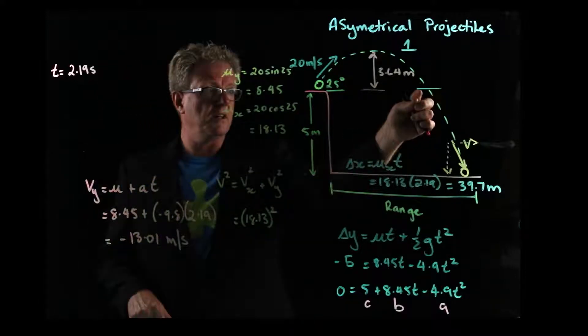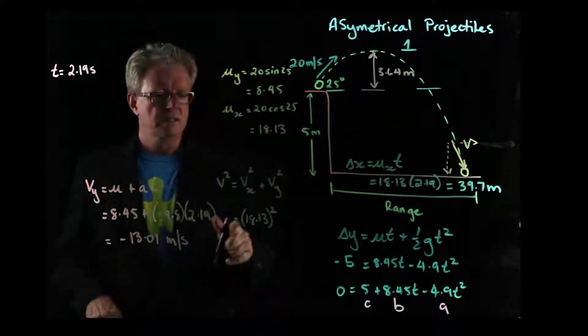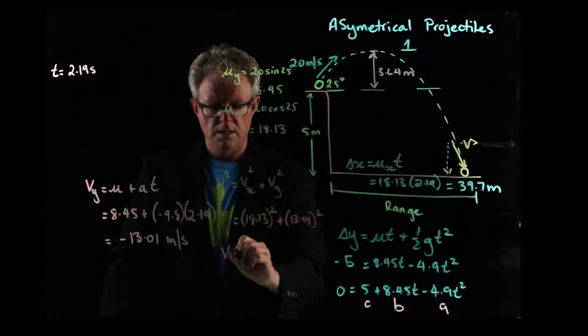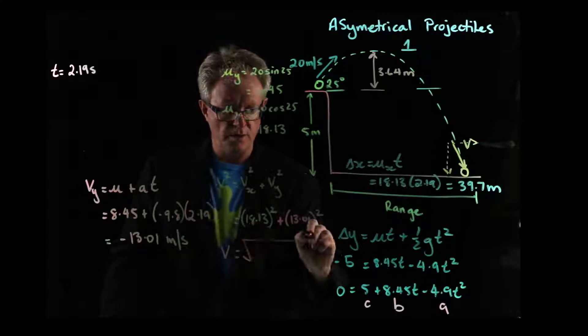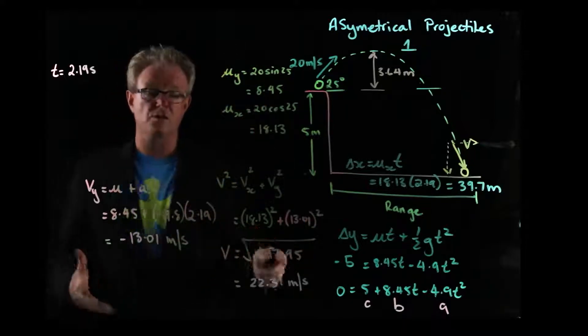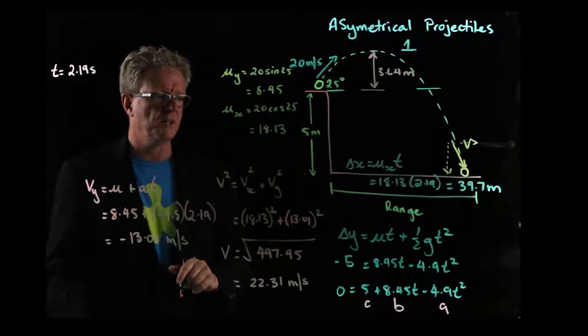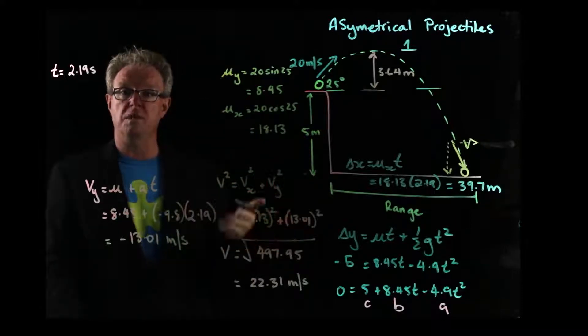It's going down in the negative direction here. So now we can put that in here. 13.01 squared. And we take the square root of that. So the final velocity, the magnitude of the velocity is 22.31. Of course, we have to come up with the direction because it's a vector.